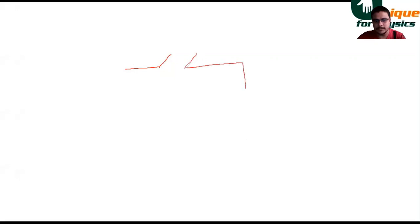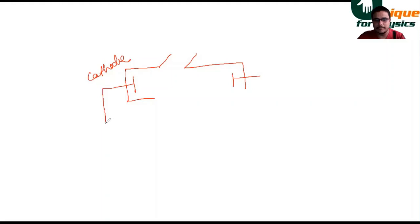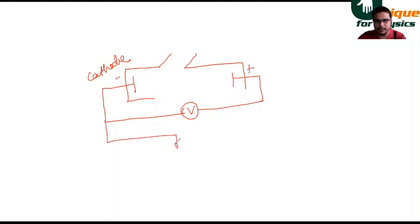The setup is very simple. We need an evacuated glass tube with a quartz window. There are two electrodes — a photocathode made up of photosensitive material, so that when light falls on it electrons will be ejected out. A voltmeter measures the potential difference between the photocathode and the anode.